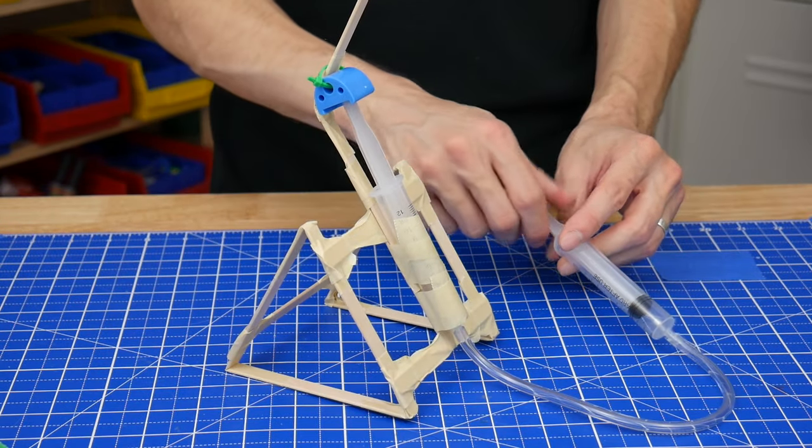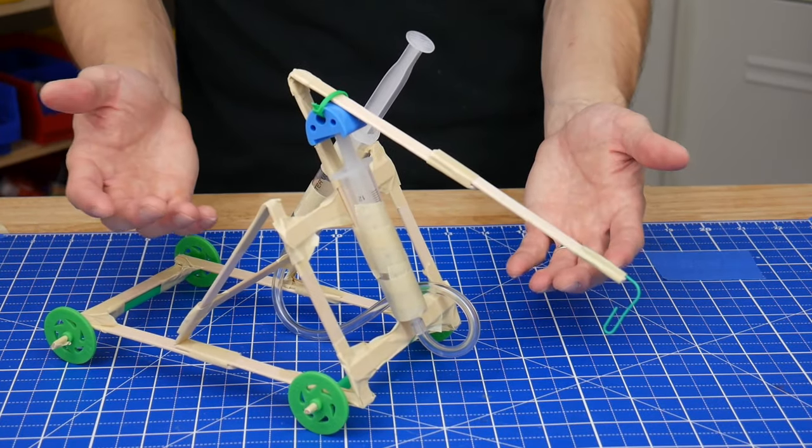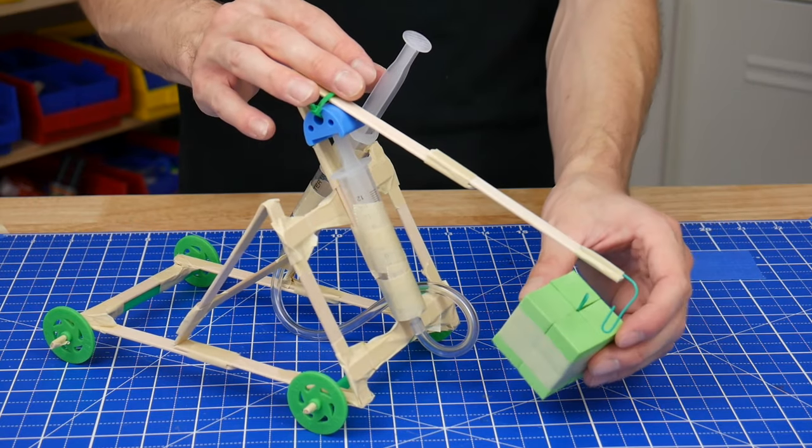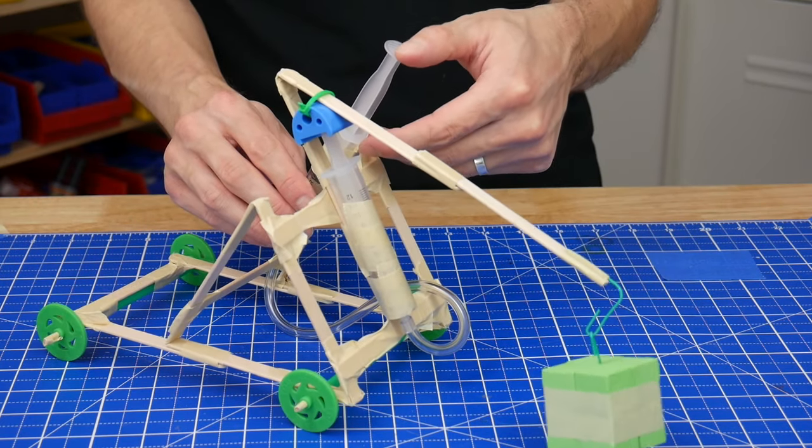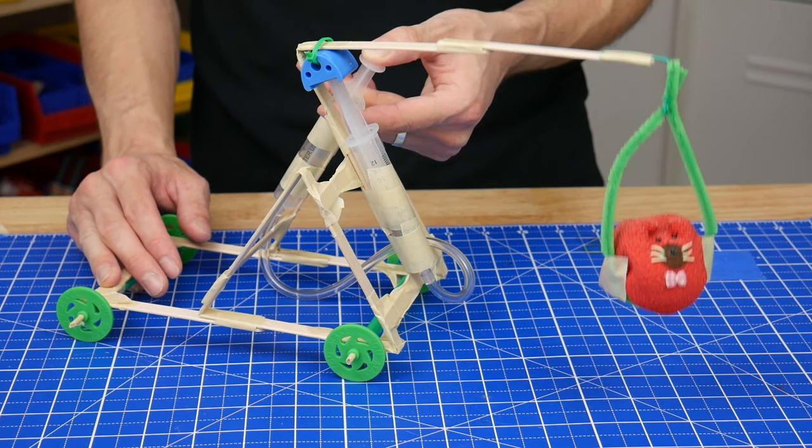So this is the basic example but of course one of the best parts about this project is customizing what it does. Whether it's building something like this that's maybe a crane or a tow truck or maybe building something a little bit more fantastical like a cat lift.